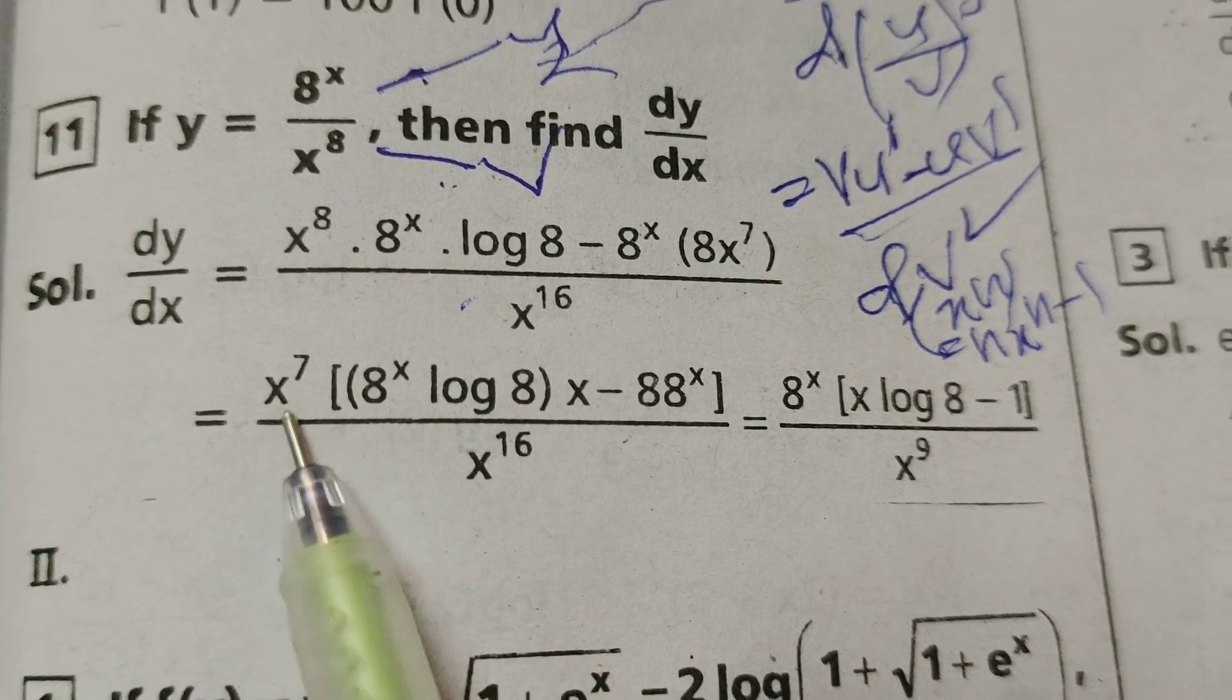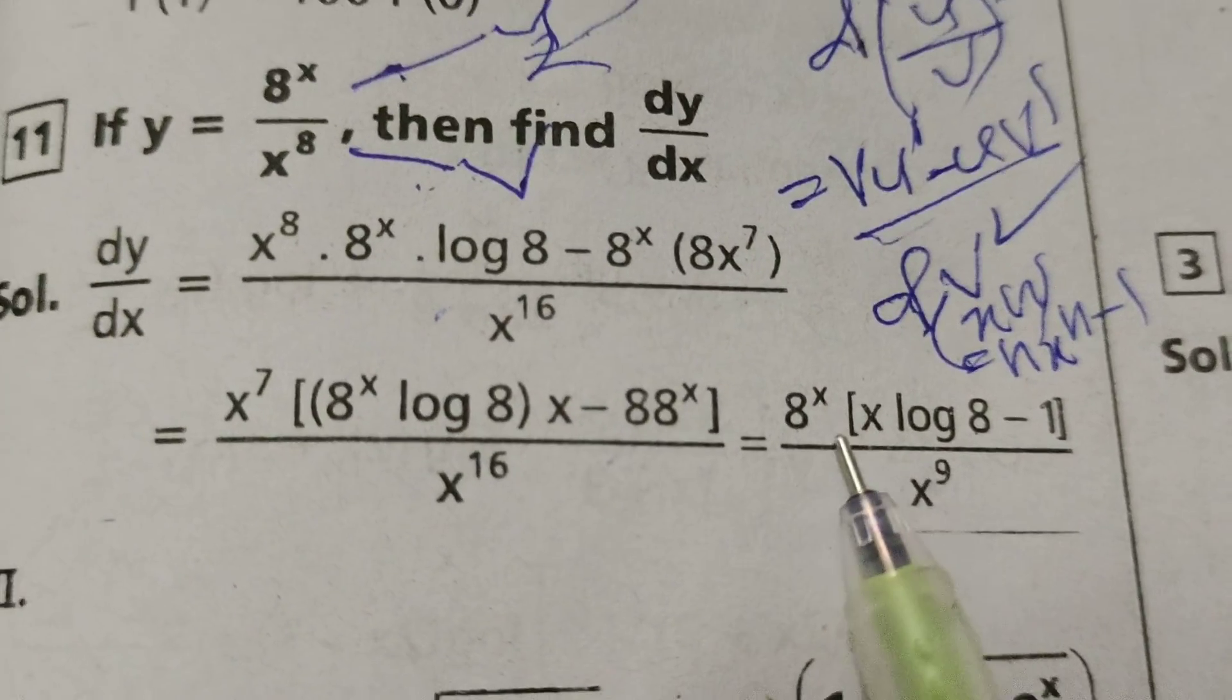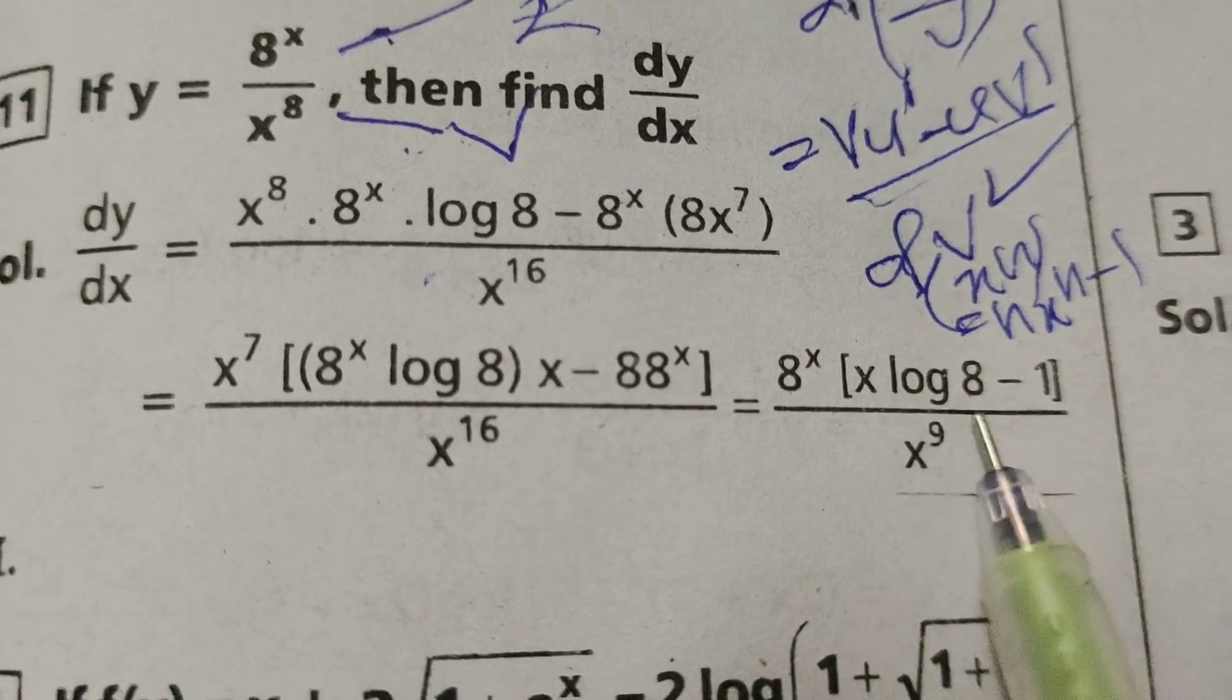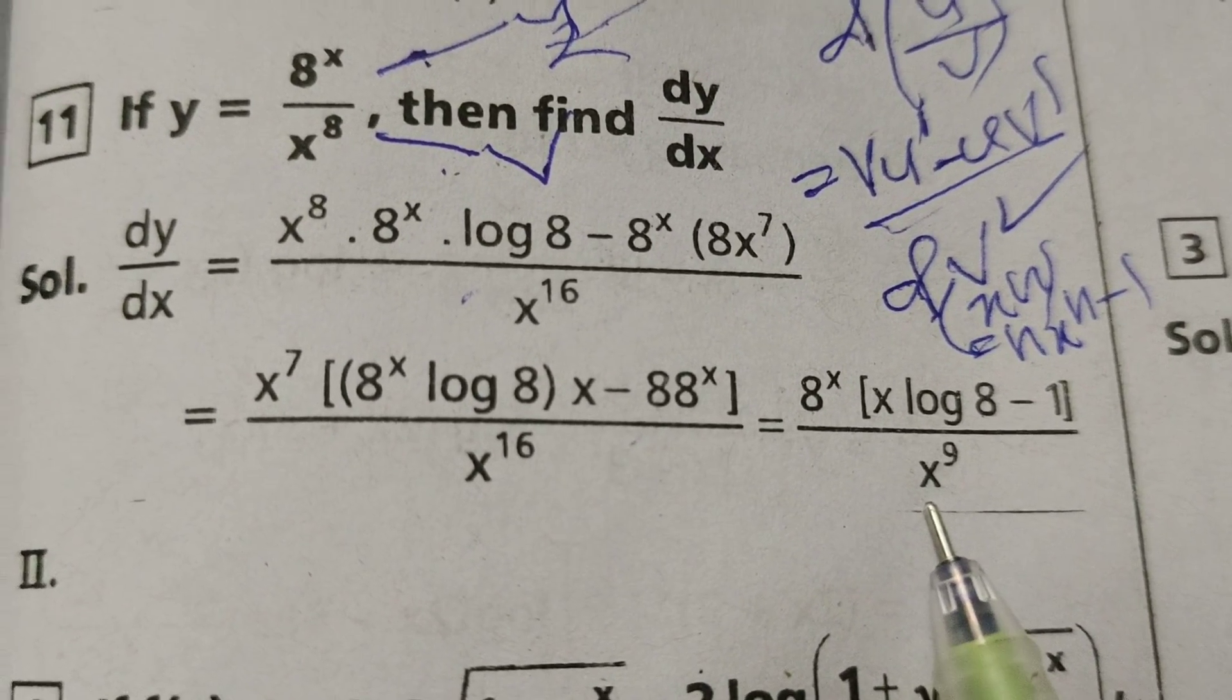x power 7, already x power 7, here 8 into 8 power x by next power 16. Again, 8 power x into x log 8 minus 1 by x power 9.